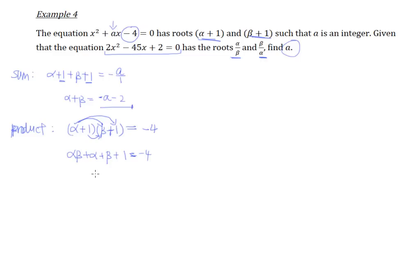So simplifying this, we will end up with something a little bit complicated actually, but I think we'll be able to simplify this. Now let's take a look, α + β, let me highlight this, α + β is actually the same as this α + β, it's actually the same as our -a - 2. So if we were to put in this α + β, which means it becomes plus (-a - 2), plus 1 equals to -4.